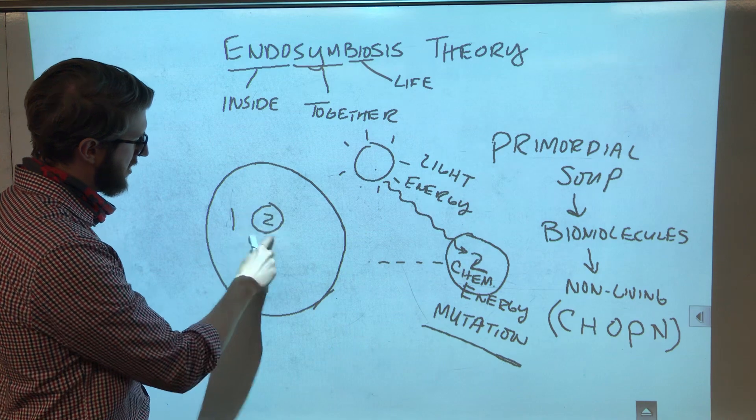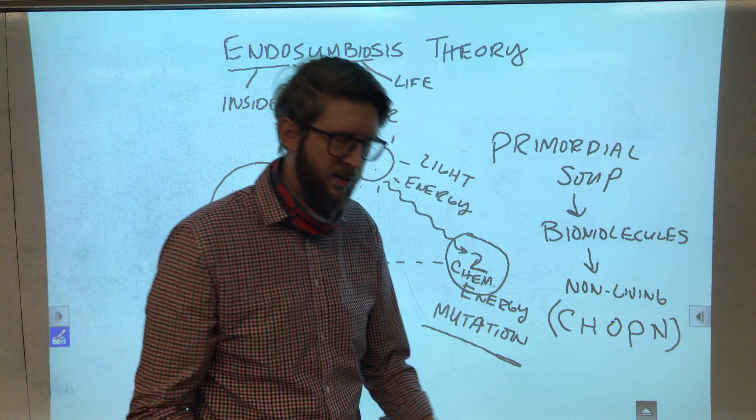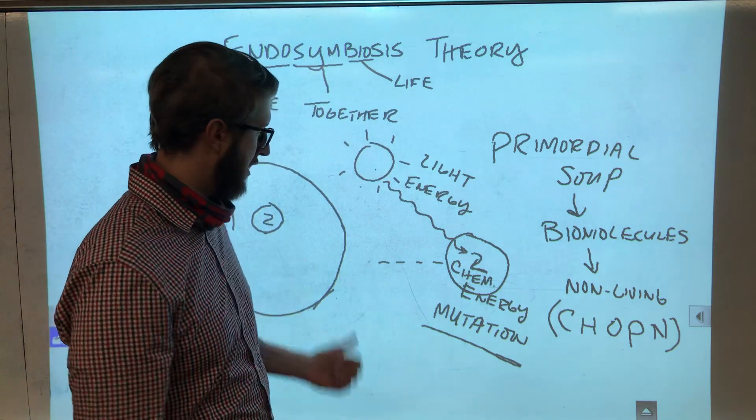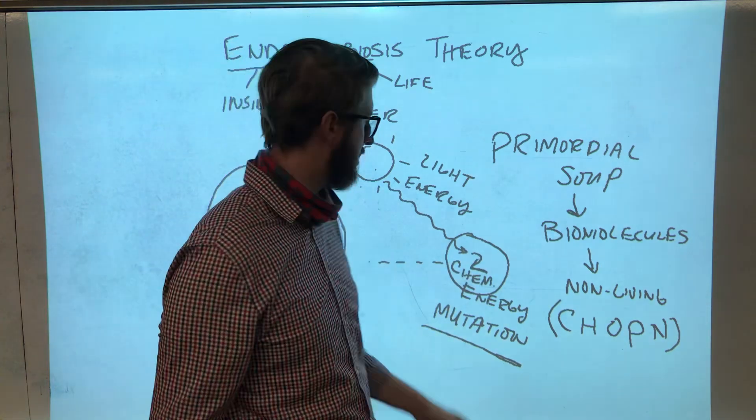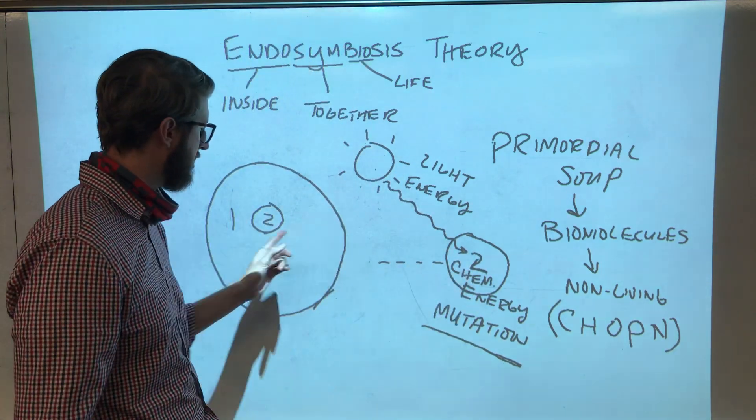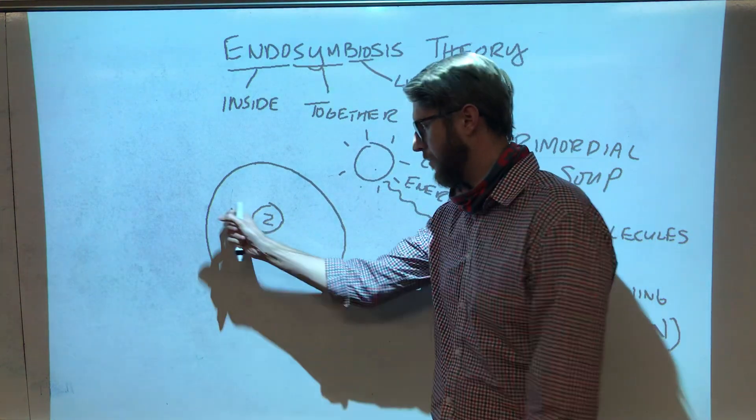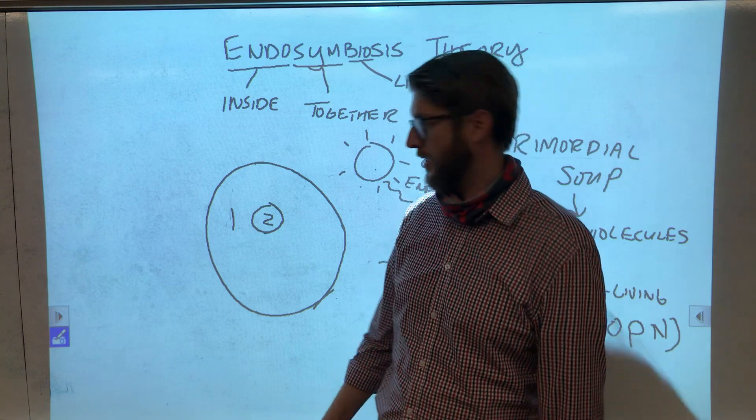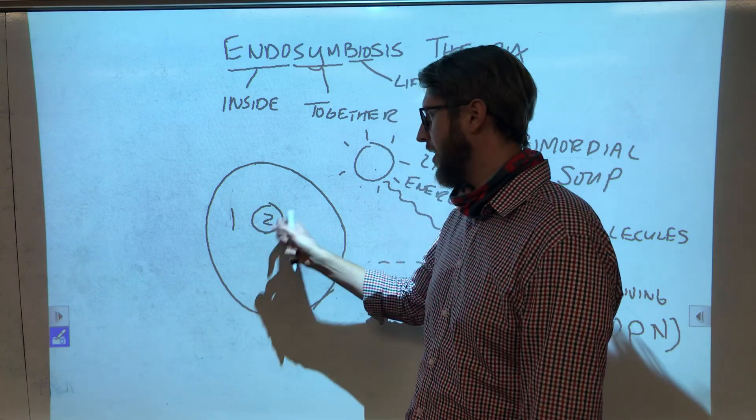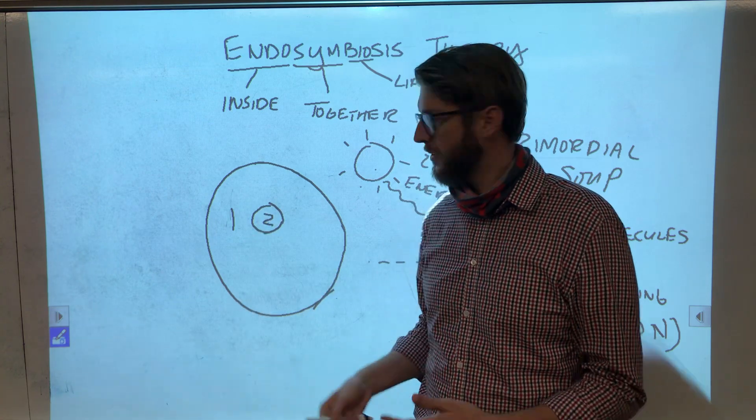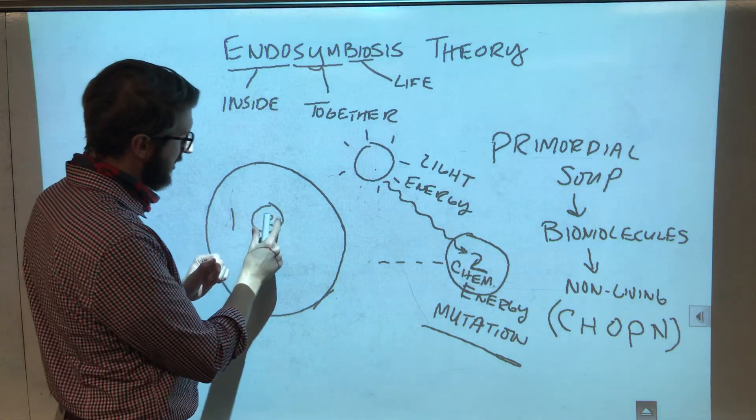So, this guy gets eaten by big cell one, and big cell one is like, hey, I'm trying to eat you, why won't you dissolve? And then little cell two says, well, because I have a mutation that keeps me from doing it, and I have a second mutation that also allows me to convert sunlight into energy to power my processes. And then big cell one says, hey, that's a great idea, can you give me some of that energy? Sure, just don't kill me.